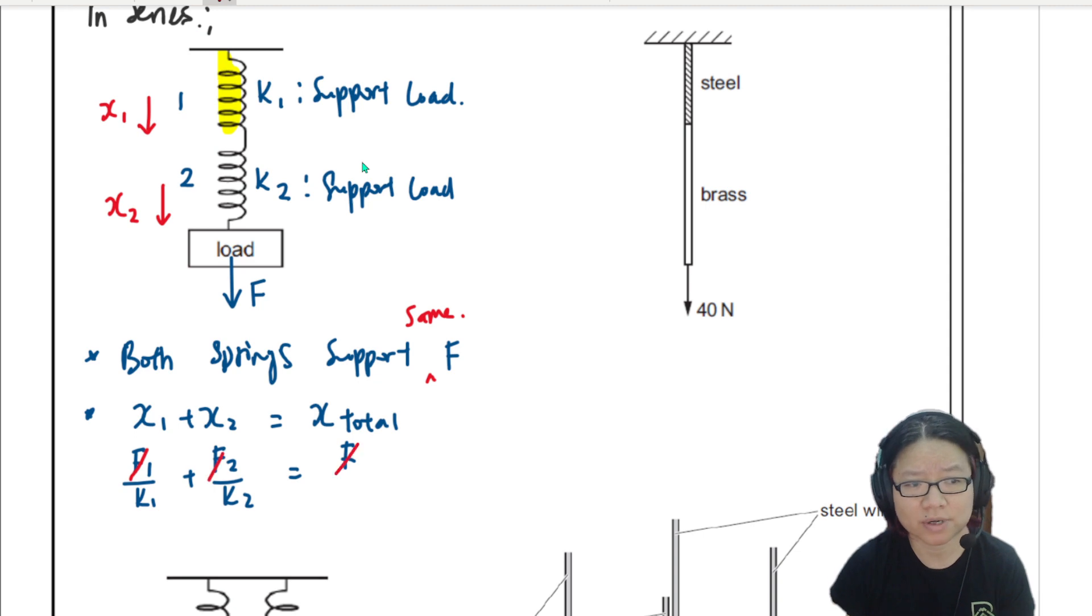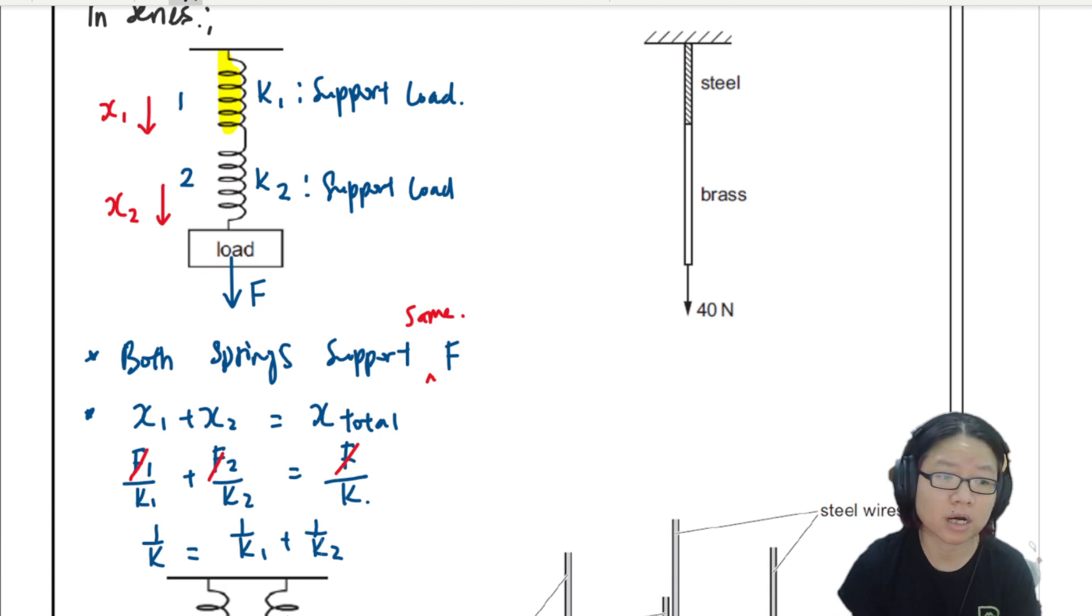So this F can cancel. So you will have 1/k = 1/k1 + 1/k2. Now, I normally don't use this equation, unless they ask me to derive it. Because these two main ideas are good enough for me, because I don't like to memorize new stuff.